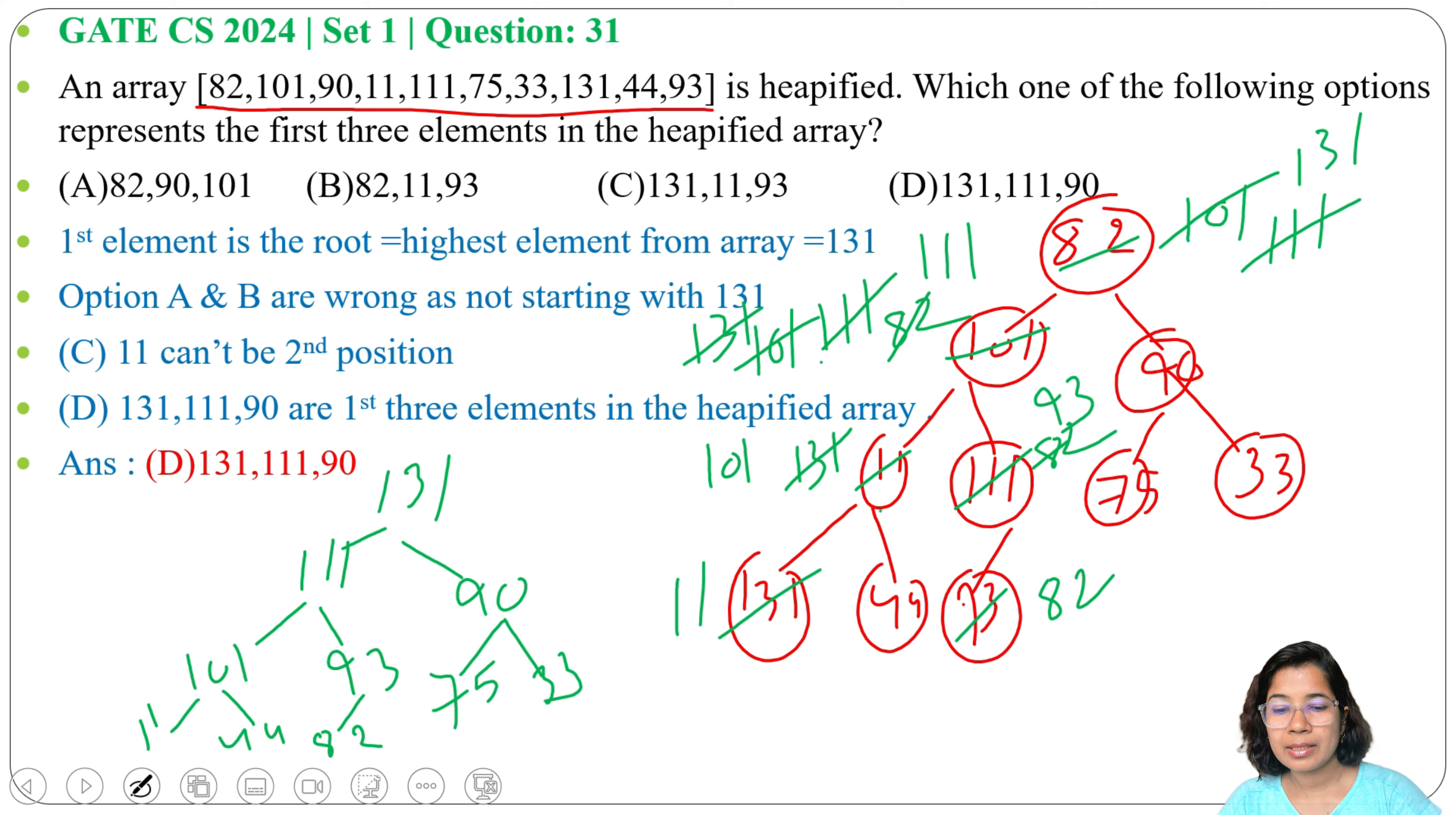We got 131, then 111, 90, 101, 93, 75, 33, then 11, 44, 82. This is the max heap after heapifying. In array representation, first we write 131, then 111, 90, then 101, then 93, 75, 33, 11, then 44, 82. First element is 131, second is 111, third is 90 - it's exactly present in option D.